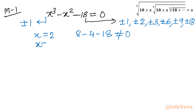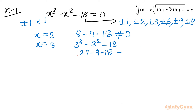Let us try x equals 3: 3 cubed minus 3 squared minus 18 gives 27 minus 9 minus 18, which equals 0. Yes! That means x equals 3 is our base solution.